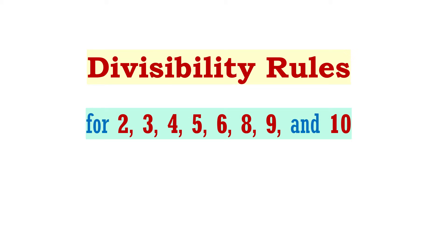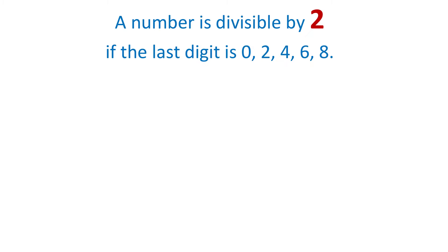Let's start with number 2. A number is divisible by 2 if the last digit is 0, 2, 4, 6, or 8.